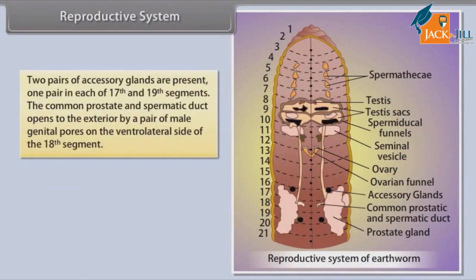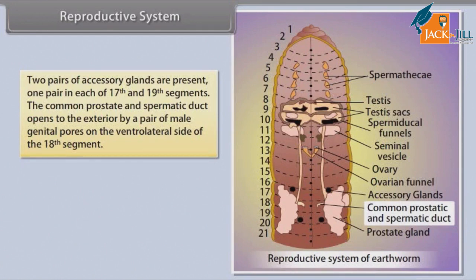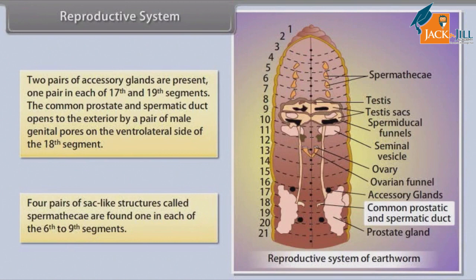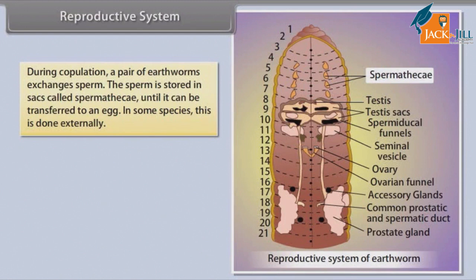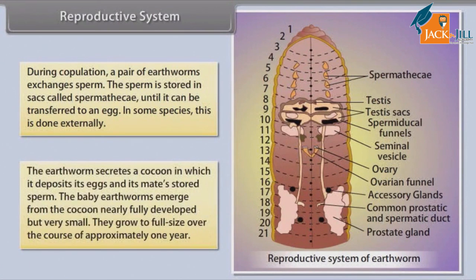Two pairs of accessory glands are present, one pair in each of the seventeenth and nineteenth segments. The common prostate and spermatic duct opens to the exterior by a pair of male genital pores on the ventrolateral side of the eighteenth segment. Four pairs of sac-like structures called spermathecae are found, one in each of the sixth to ninth segments. During copulation, a pair of earthworms exchanges sperm. The sperm is stored in sacs called spermathecae until it can be transferred to an egg. The earthworm secretes a cocoon in which it deposits its eggs and its mate's stored sperm.